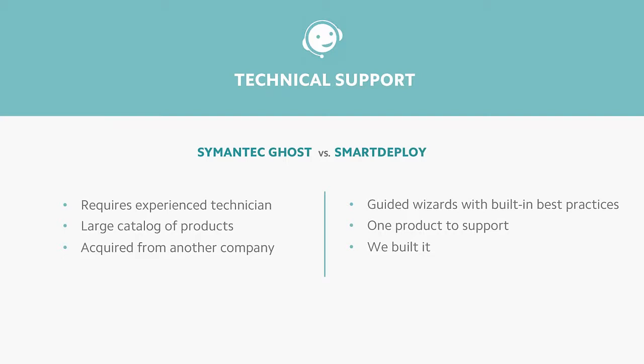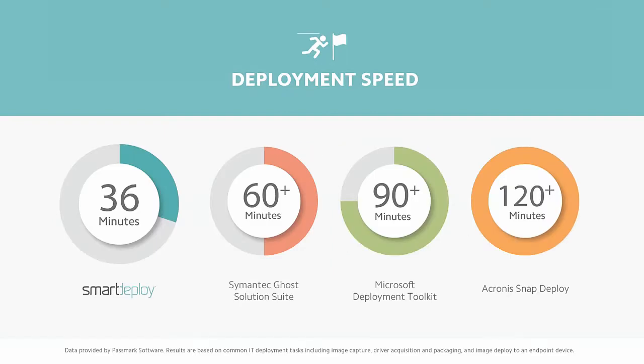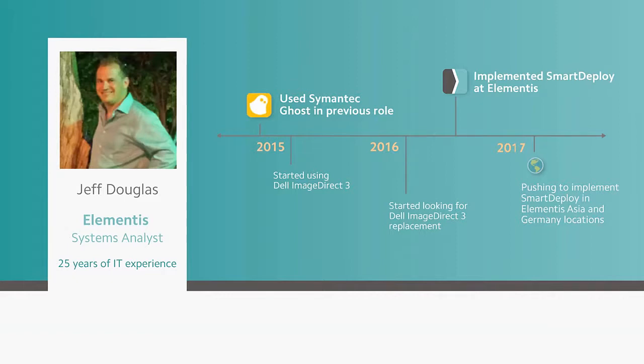A big focus right now is Windows 7 to 10 migration, including pulling over user data for remote offices or home users through the cloud. We also want everything to happen as fast as possible — offline deployments from a simple USB stick, or using Google Drive, OneDrive, OneDrive for Business, or Dropbox. You can see a deployment happen in 30 minutes to three hours depending on bandwidth — and that beats UPS and FedEx. We'll now turn time over to Jeff to hear about his experience moving from Ghost to SmartDeploy.